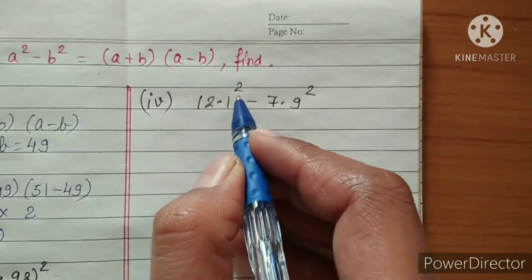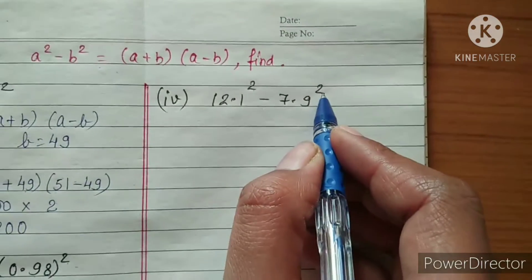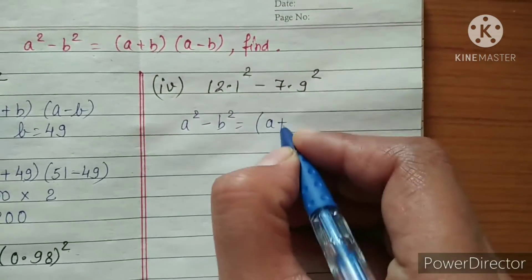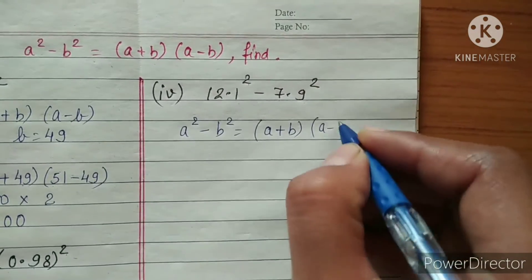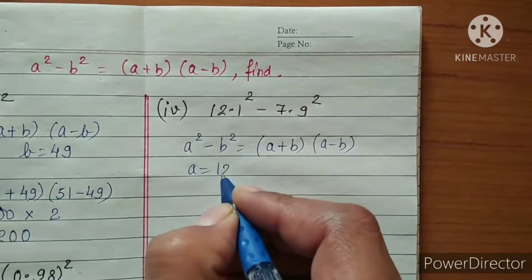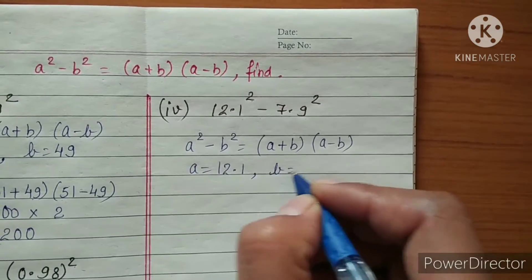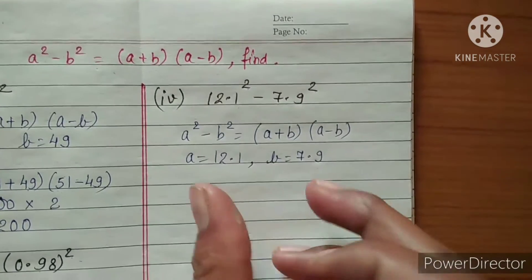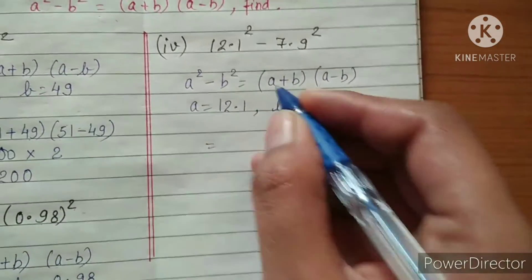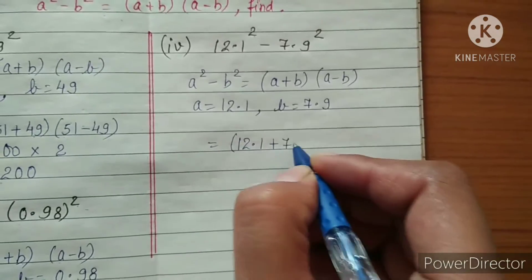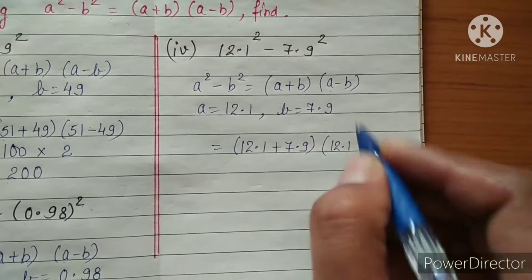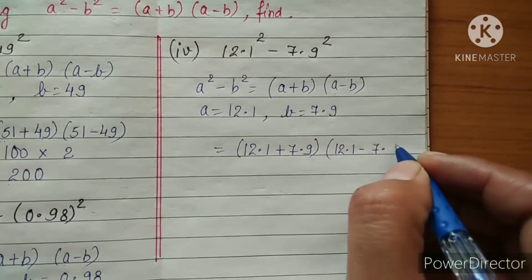Part 4 is 12.1 squared minus 7.9 squared. The identity is a squared minus b squared equals a plus b multiplied by a minus b. Comparing, a is 12.1 and b is 7.9. We substitute: 12.1 plus 7.9 multiplied by 12.1 minus 7.9.